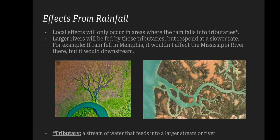Local effects will only occur in areas where the rain falls into tributaries. Tributaries are streams of water that feed into a larger stream or river, as you can see in these pictures — those things off to the side that kind of look like veins. Larger rivers will be fed by those tributaries but they respond at a slower rate. Tributaries get the effects right then and there when it happens, but a river will slowly take on those effects over time.